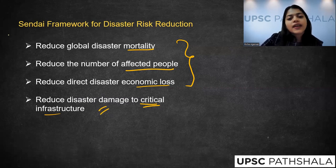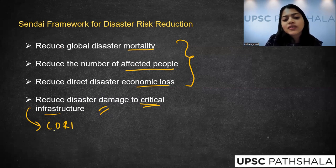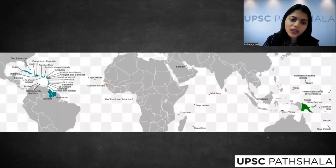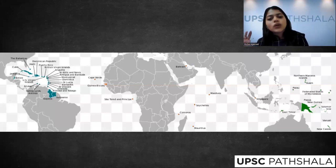This fourth objective of the Sendai Framework for Disaster Risk Reduction — protecting critical infrastructure — is being targeted through CDRI, the Coalition for Disaster Resilient Infrastructure. India targeted a subset of countries towards this risk reduction goal.